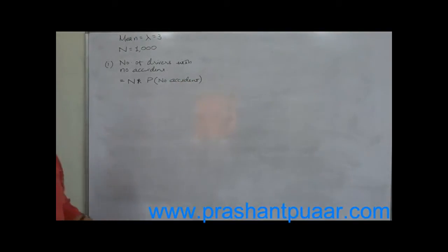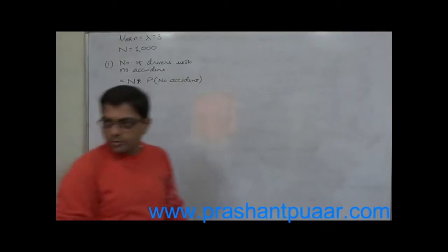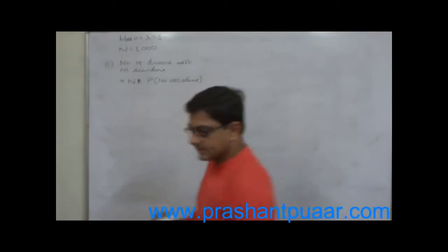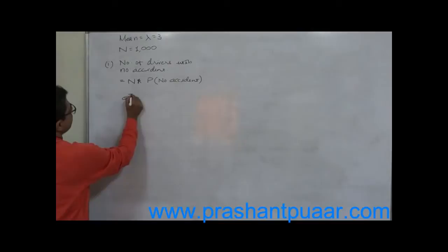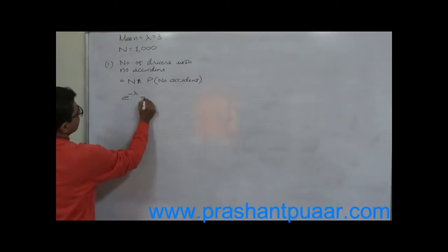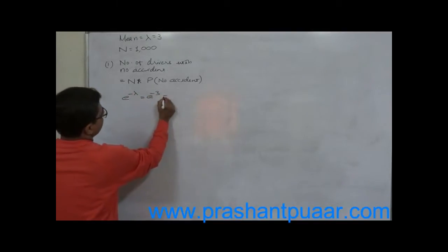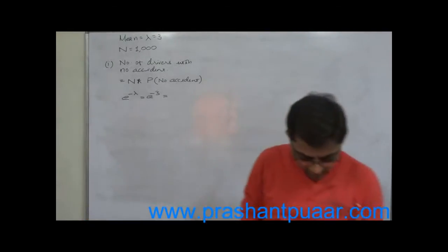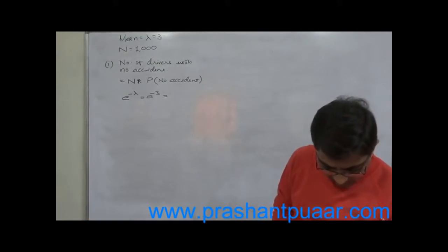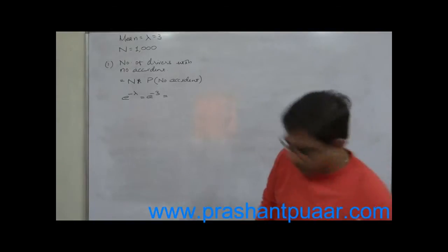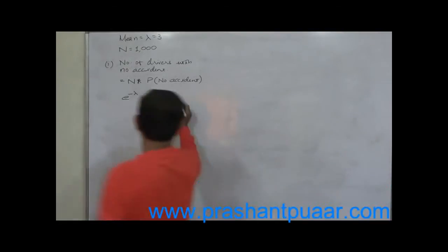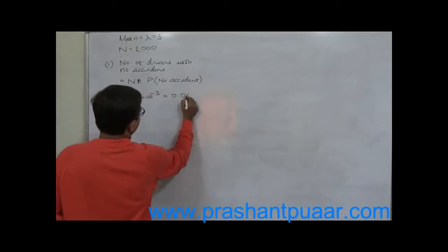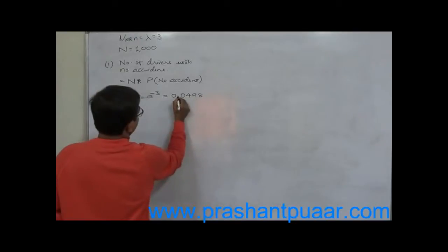First of all, we have to calculate the probability of no accidents in a year. For that purpose, we need e raised to minus mean, that is e raised to minus 3. From the table, we know that e raised to minus 3 equals 0.0498.